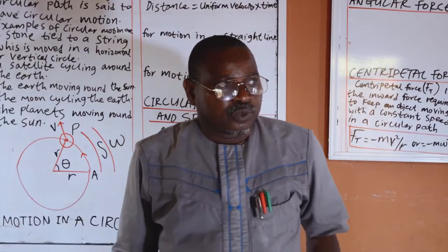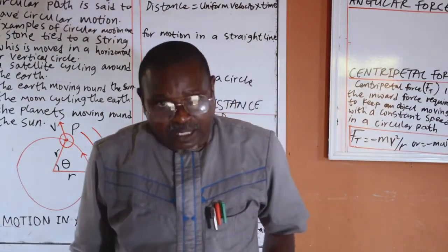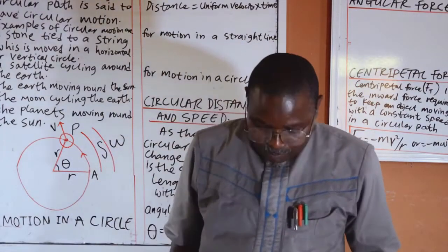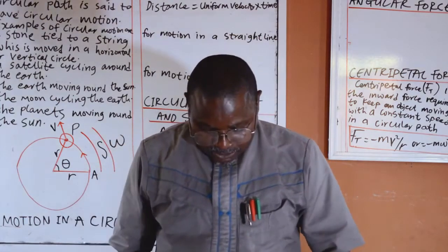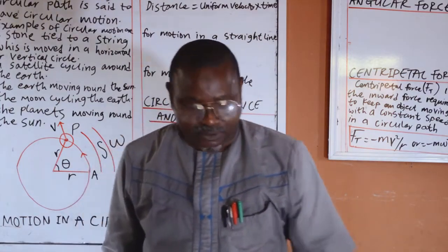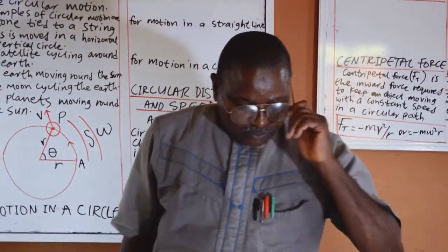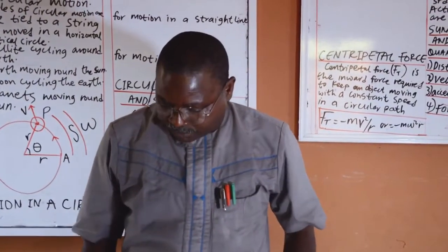Number 2, a satellite cycling around the earth, a moon cycling the earth and the earth moving around the sun. Number 5, the planet moving around the sun.